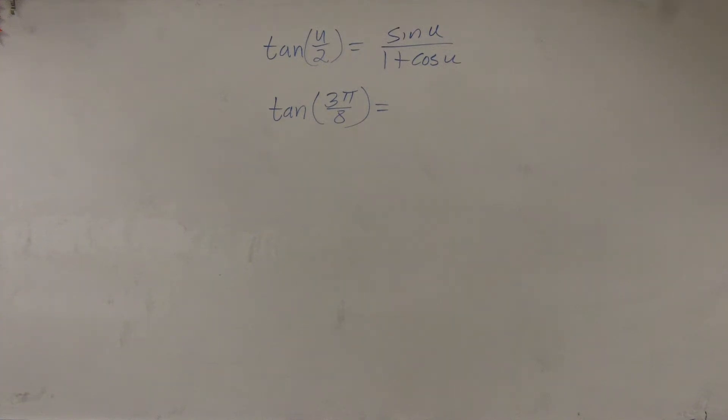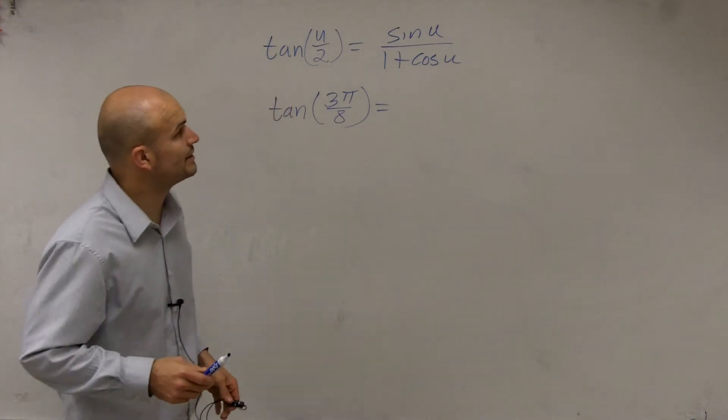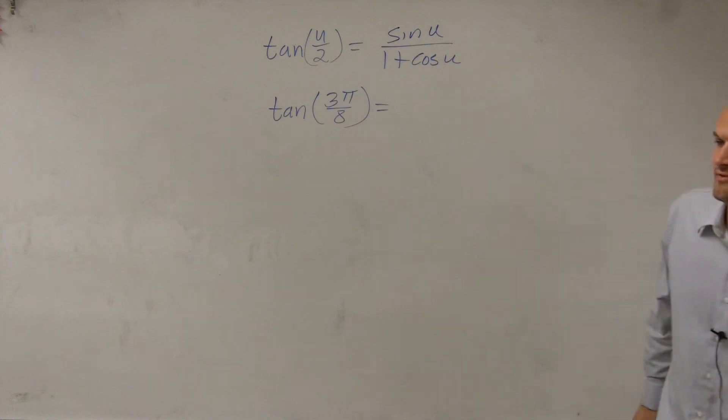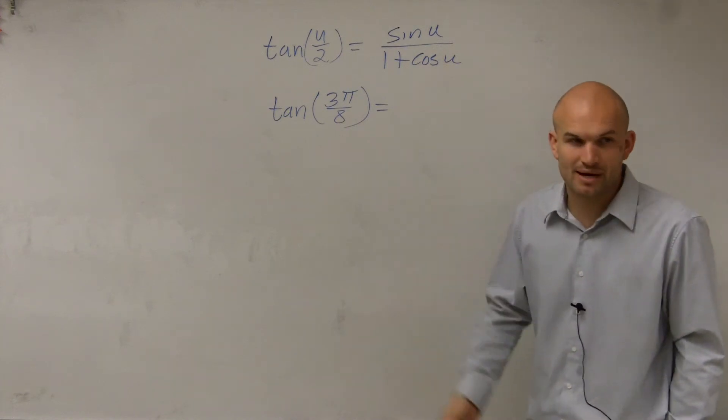So last one, what I have here is tangent of u divided by 2 equals sine of u divided by 1 plus cosine of u. And what I'd like to evaluate for you is the tangent of 3 pi divided by 8.